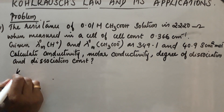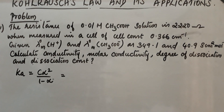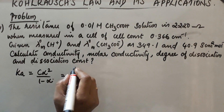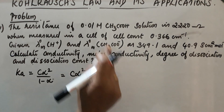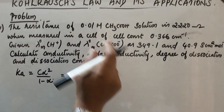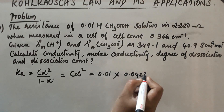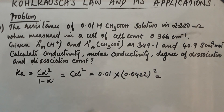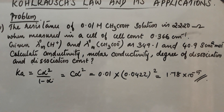Finally, the dissociation constant K_a = Cα² / (1 − α). Since α is very small, we can approximate: K_a ≈ Cα². With C = 0.01 and α = 0.0422, K_a = 0.01 × (0.0422)² = 1.78 × 10⁻⁵. This concludes Kohlrausch's Law, its applications, and the numerical problem.